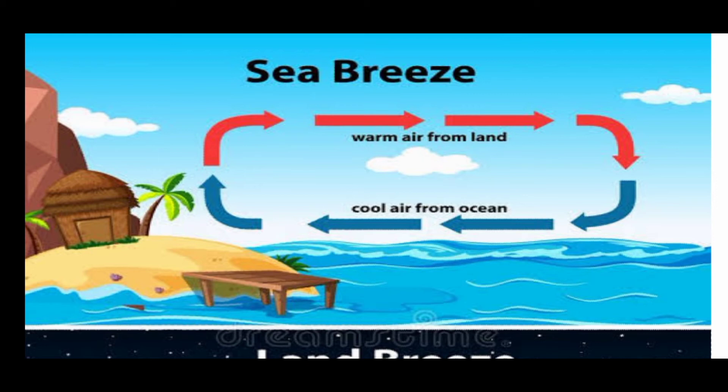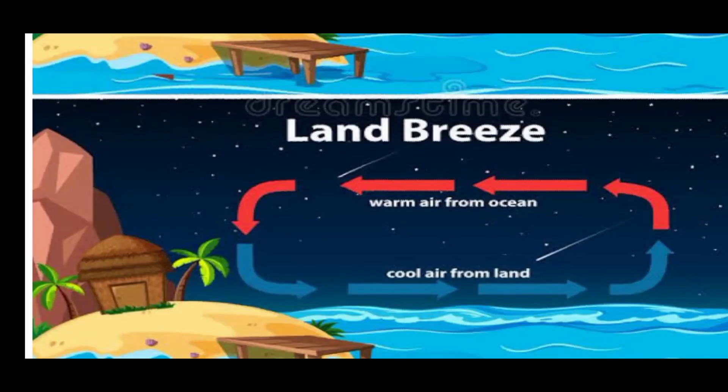To receive the cooler sea breeze, the windows of houses in coastal areas are made to face the sea. At night it is exactly the reverse — the water cools down more slowly than the land, so the cooler air from the land moves towards the sea. This is called land breeze.